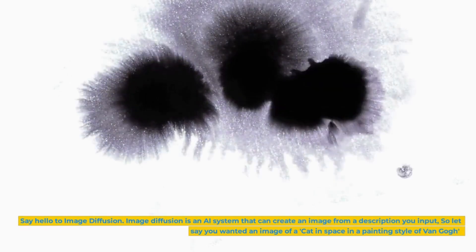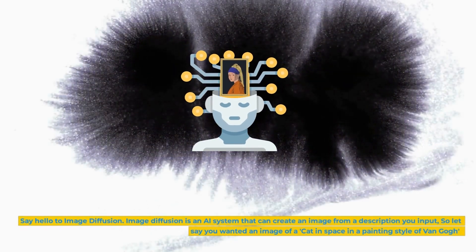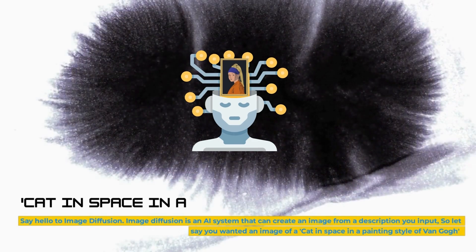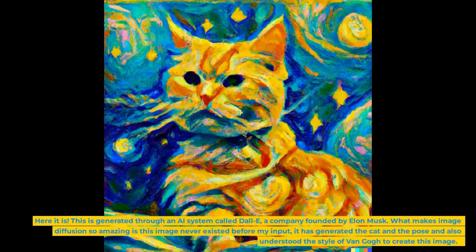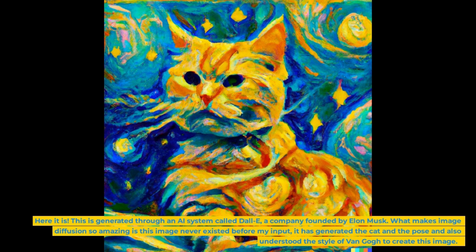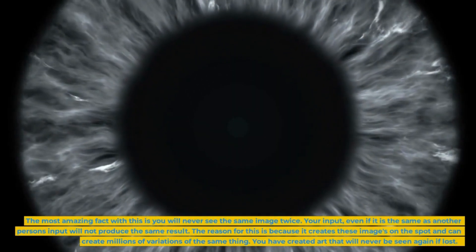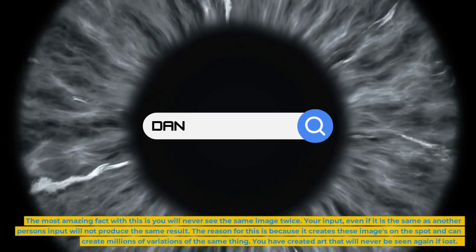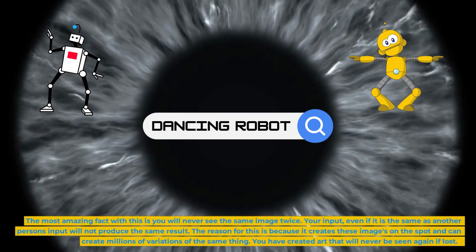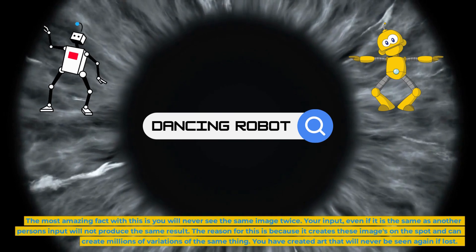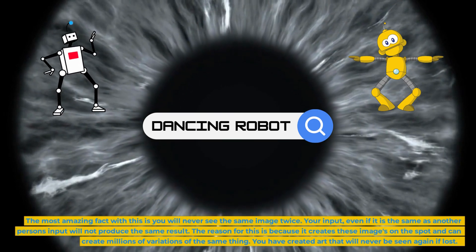Say hello to image diffusion. Image diffusion is an AI system that can create an image from a description you input, so let's say you wanted an image of a cat in space in a painting style of Van Gogh. Here it is. This is generated through an AI system called DALL-E, a company founded by Elon Musk. What makes image diffusion so amazing is this image never existed before my input. It has generated the cat and the pose and also understood the style of Van Gogh to create this image. The most amazing fact with this is you will never see the same image twice. Your input, even if it is the same as another person's input, will not produce the same result. The reason for this is because it creates these images on the spot and can create millions of variations of the same thing. You have created art that will never be seen again if lost.